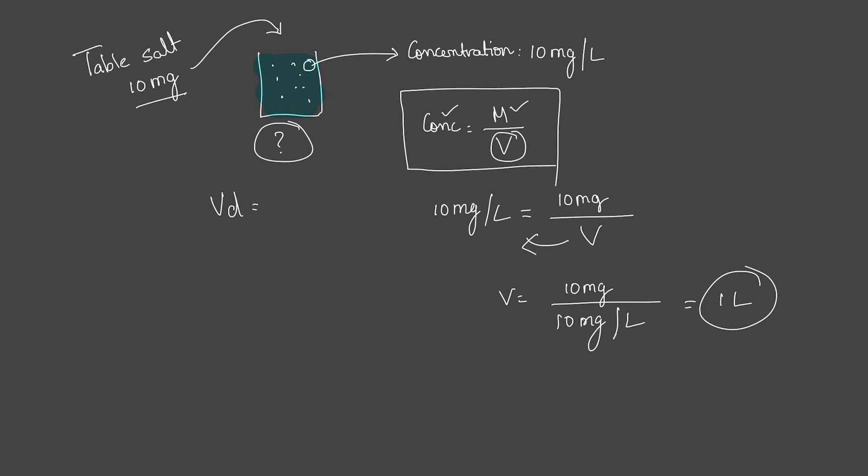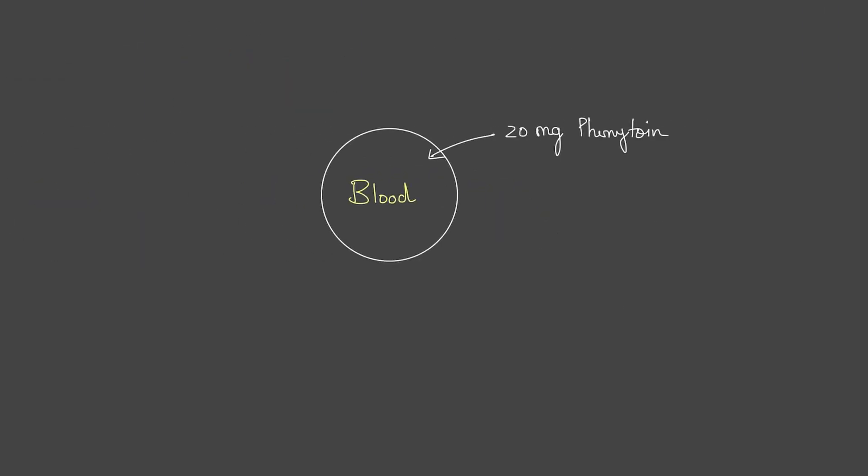Now why is that relevant here? Because if you think about this example, when you inject a substance into the blood, you can also take a little bit out to measure its concentration. So if you can inject phenytoin 20 milligrams, wait for it to completely get distributed within the circulatory system, take a little bit out, measure its concentration, you should be able to find the volume of distribution.